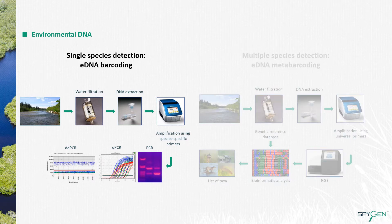In eDNA barcoding, species-specific primers are designed for a target species, and the DNA is amplified using a PCR, a qPCR, or a digital droplet PCR. The result of the amplification is then analyzed, for example on an agarose gel for the PCR, and the presence or absence of the species is determined.